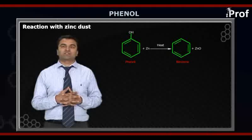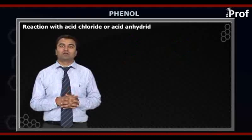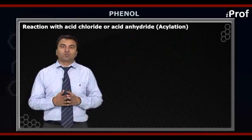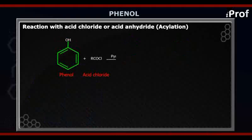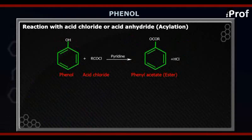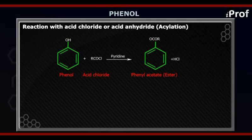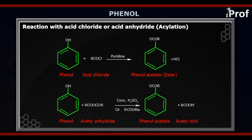The next reaction of phenol is with acid chlorides. If you use acid chloride in the reaction, then we use pyridine as the solvent. If you use acid anhydride as a reagent, then we use concentrated H2SO4 as the solvent.